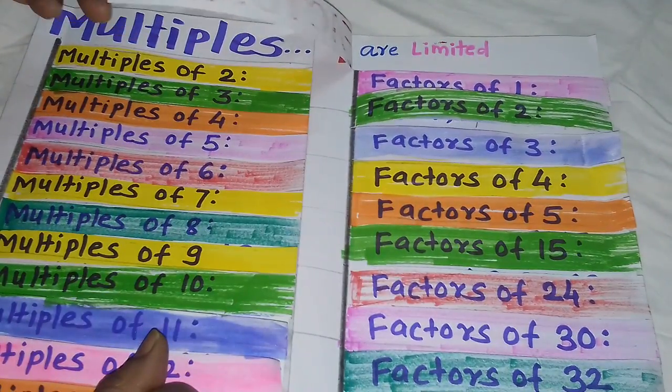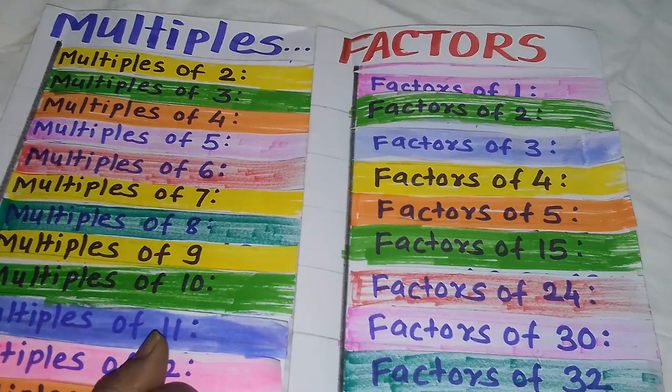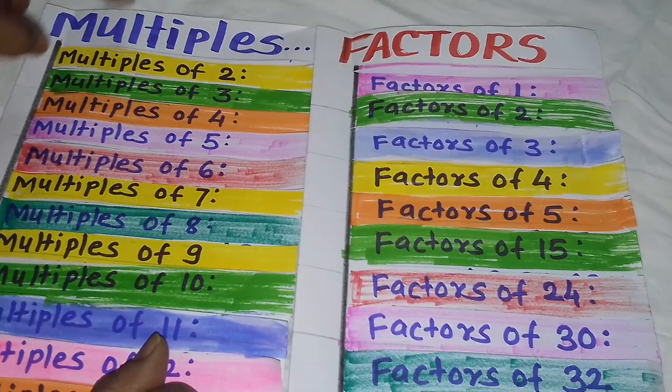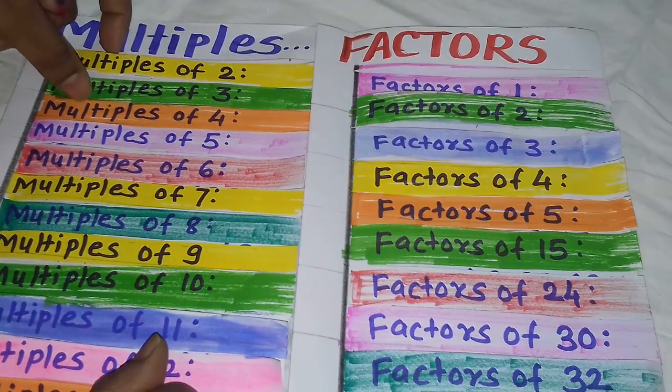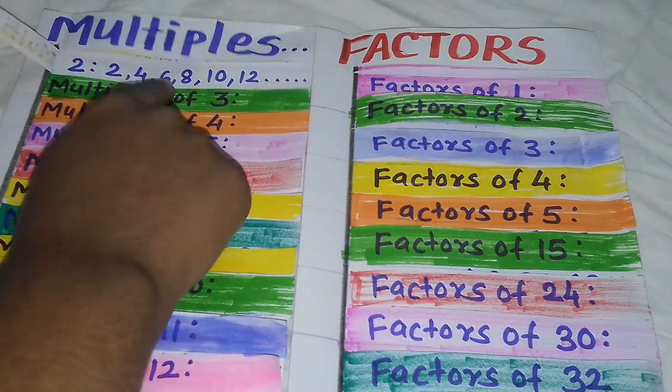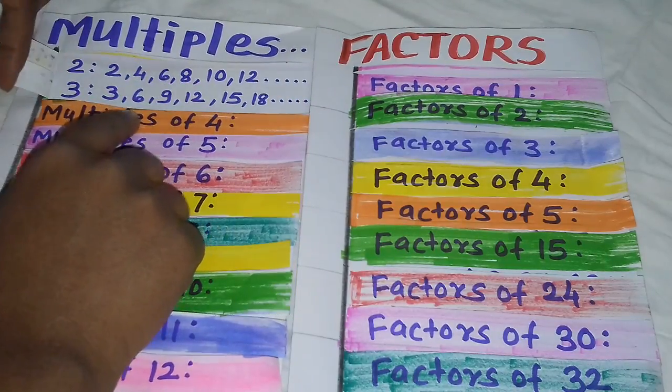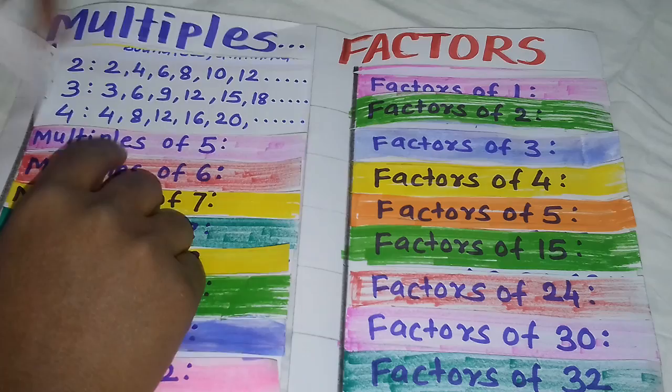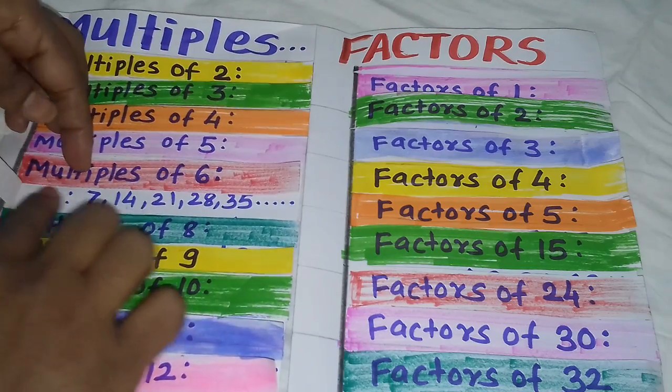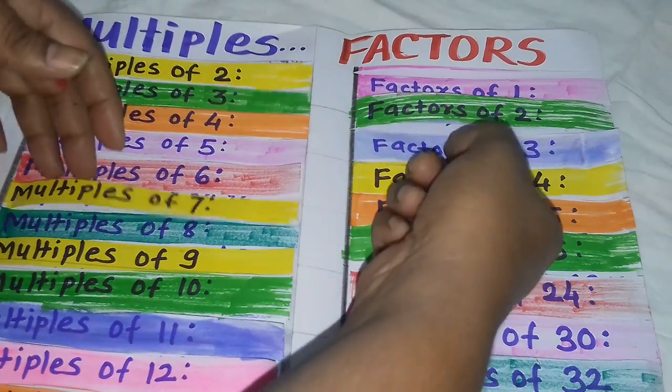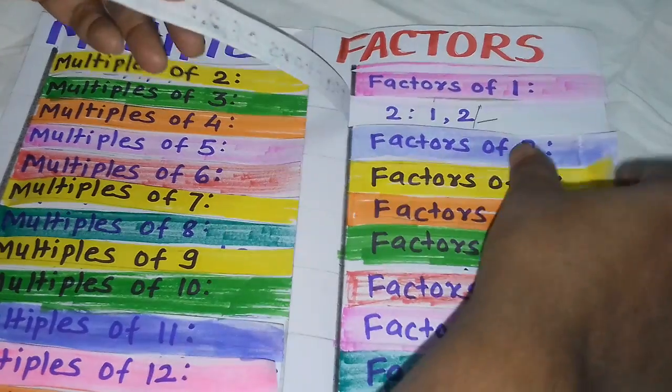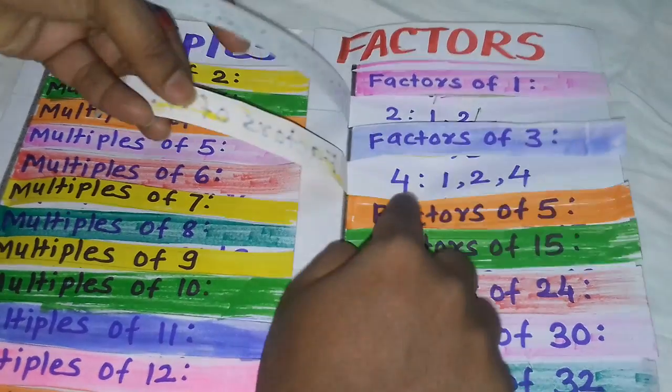This is the major difference between multiples and factors. Multiples start with the same number—see, multiples of 7 start with 7—and factors of any number start with the number 1.